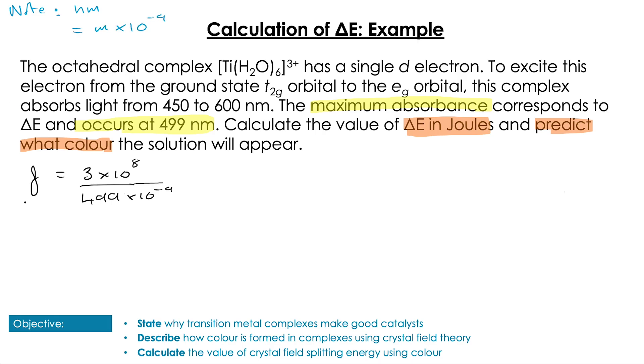Firstly, I'm going to extract my key information: the maximum absorbance is 499 nanometers. My frequency is going to be equal to the speed of light divided by 499 times 10 to the minus 9. Little reminder that nanometers are meters times 10 to the minus 9.